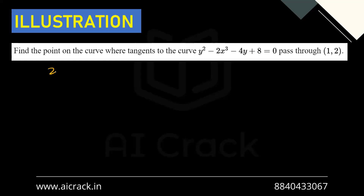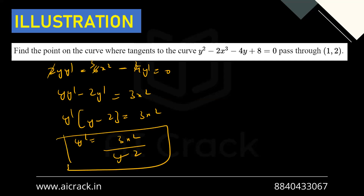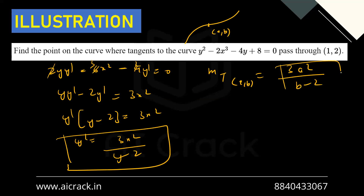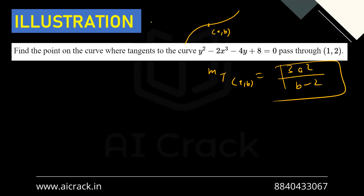Differentiating implicitly: 2y·y' - 6x² - 4y' = 0. Factoring: y'(2y - 4) = 6x², so y' = 3x²/(y - 2). Therefore m_t at (a, b) equals 3a²/(b - 2).